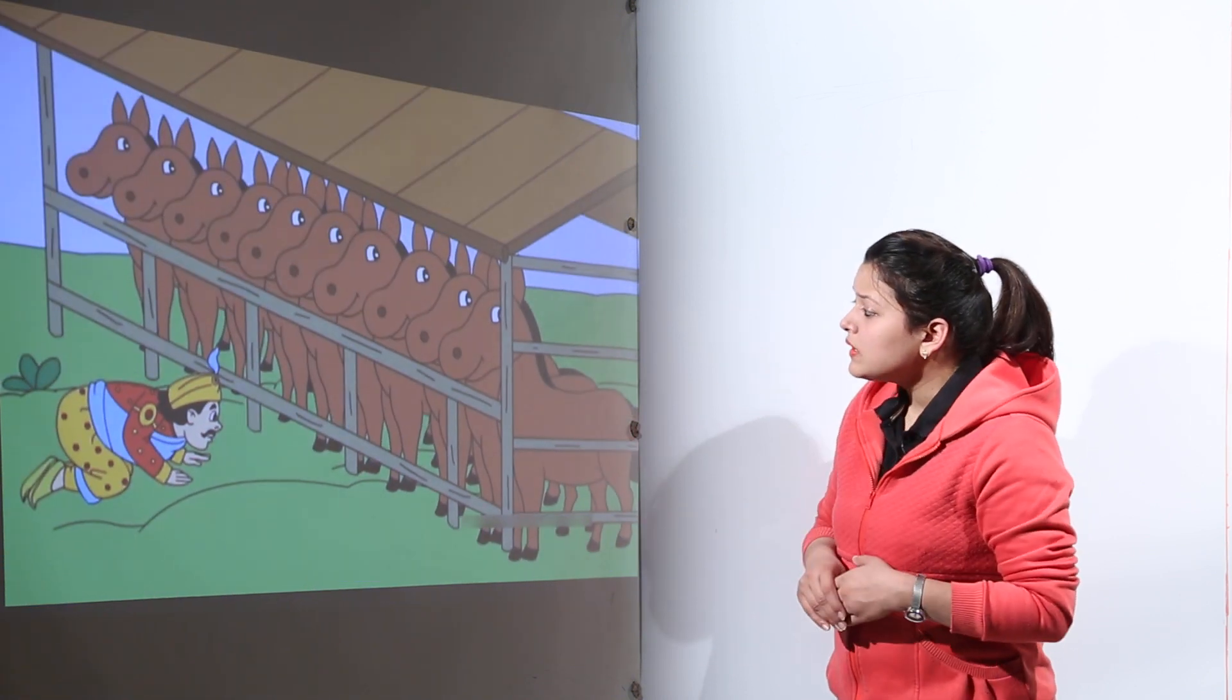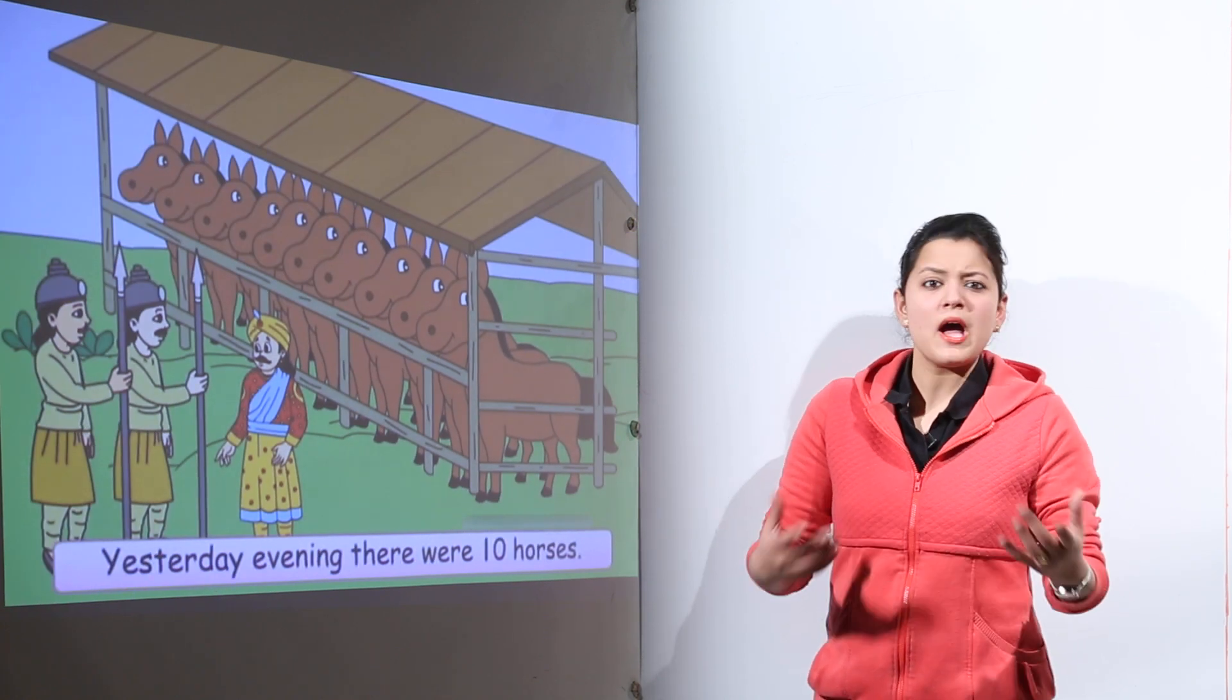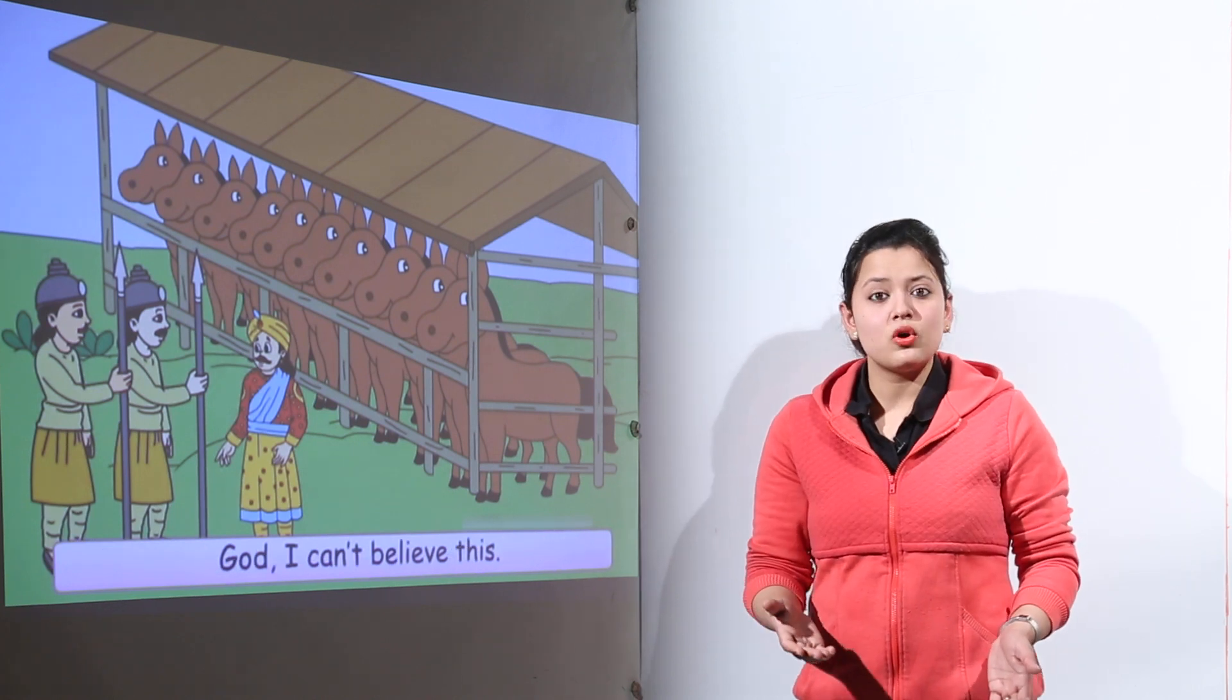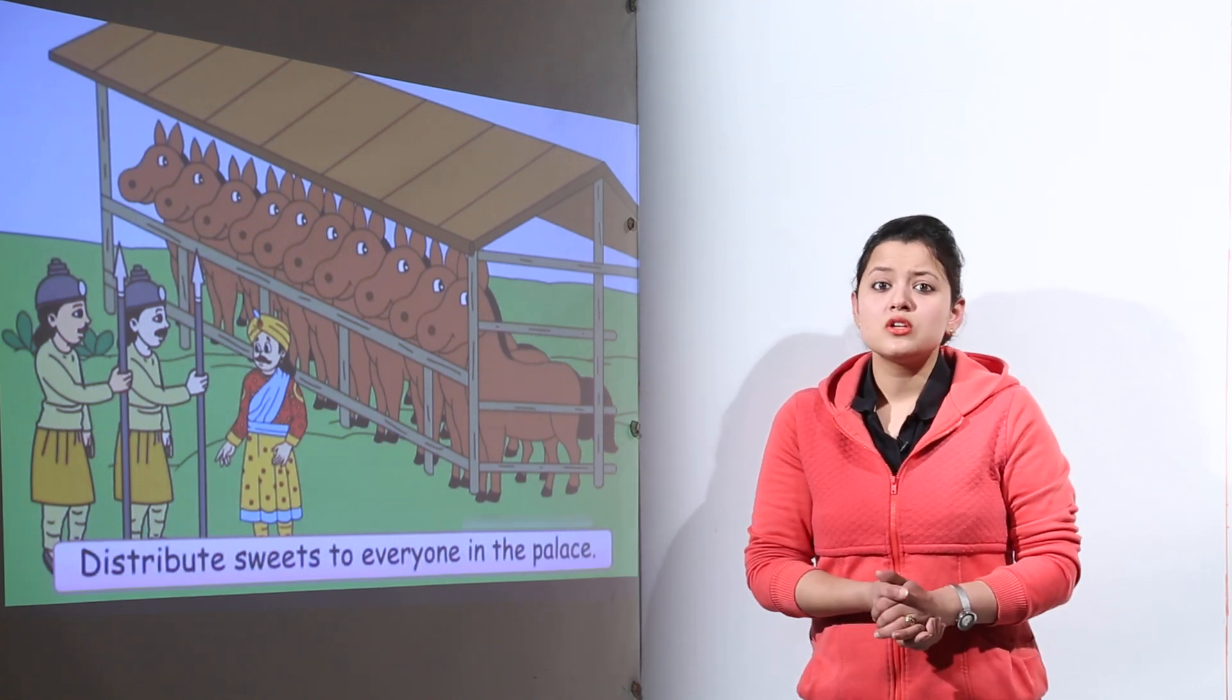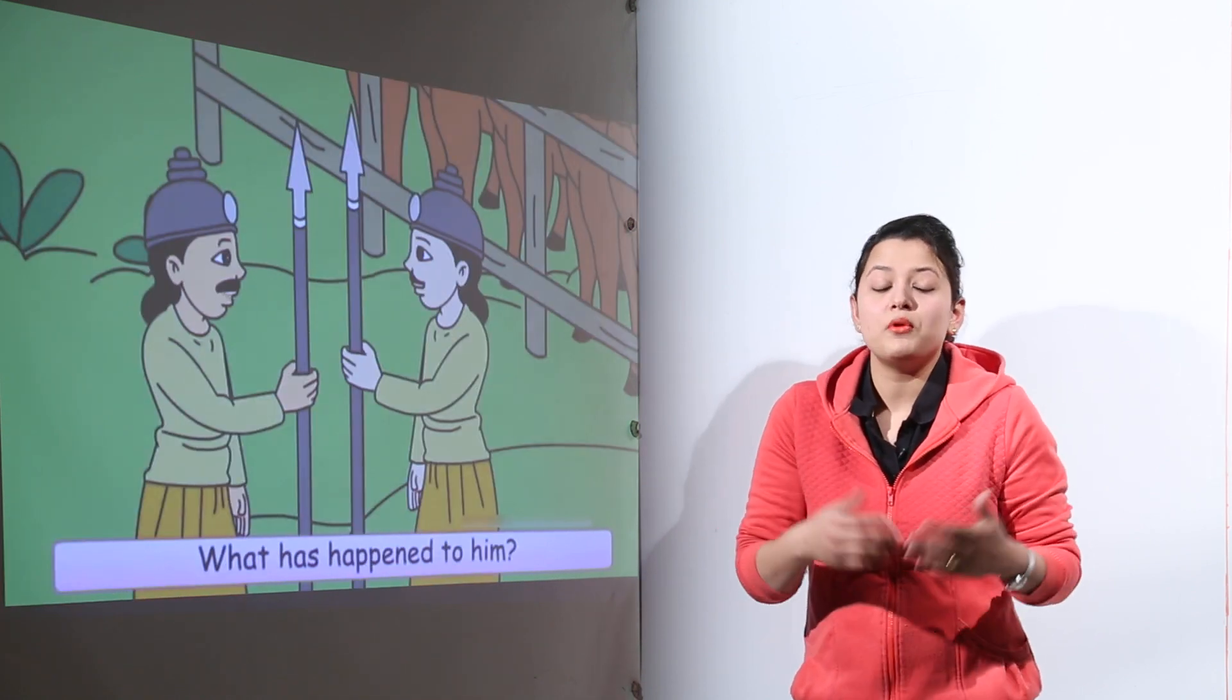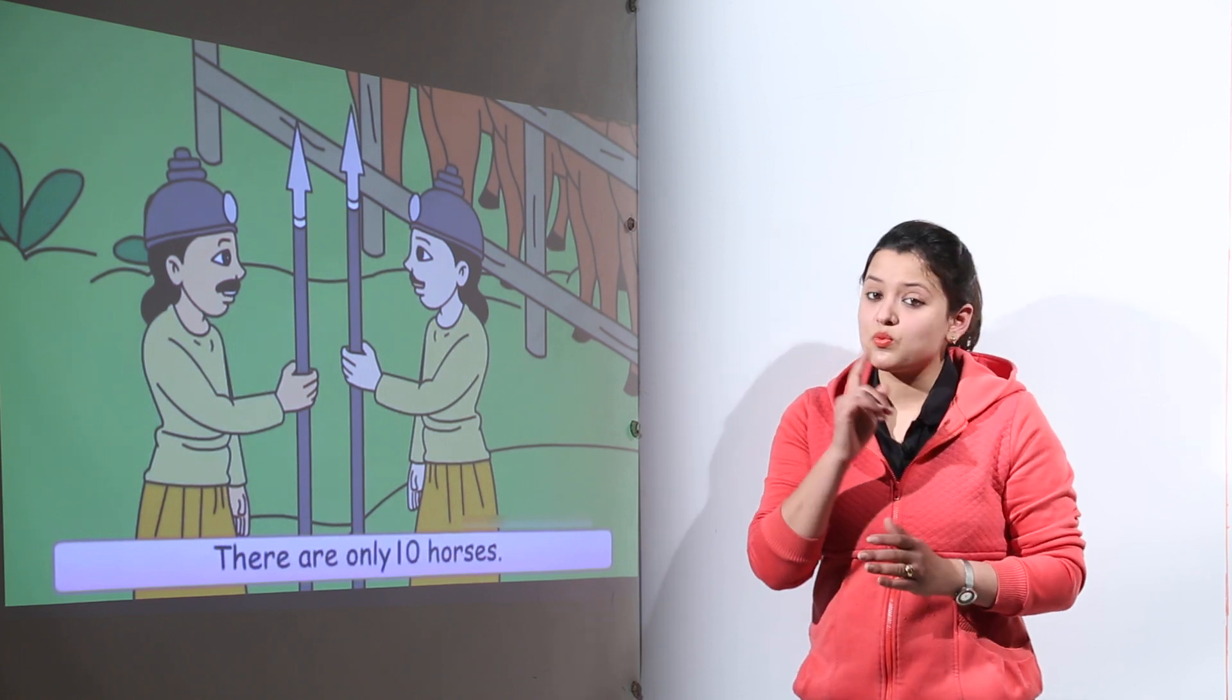Then he counted the legs of the horses and they were 40. And the king was so happy that last night he had 40 horses but now in the next morning he is counting 40 legs. So he thought that there are 40 horses. Let us distribute sweets in the kingdom because a miracle has happened. 30 babies of horses have born in just one night.